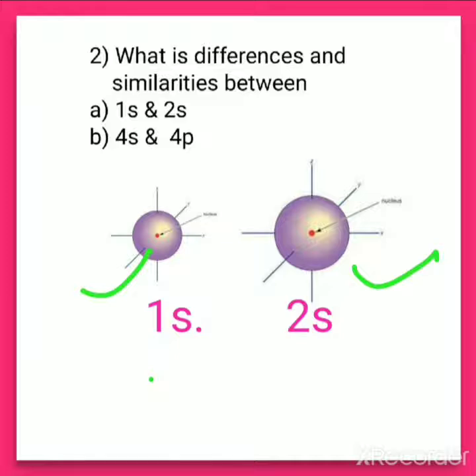Even though 1S and 2S have the same shape, they differ in size. The 1S orbital belongs to the first shell (n = 1), and the 2S orbital belongs to the second shell (n = 2). So the principal quantum number differs: it is 1 for 1S and 2 for 2S. Also, the size of 2S is greater than the size of 1S.